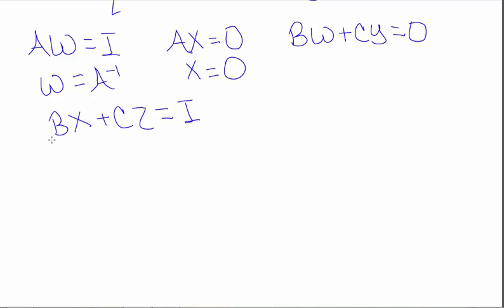At this point, I'm going to jump down to this last equation. I know that X is 0, so this becomes CZ is equal to the identity. And once again, the invertible matrix theorem gives me that C is invertible, and that Z is equal to C inverse.